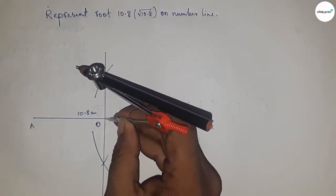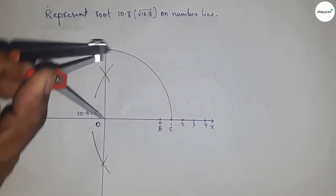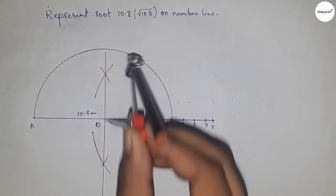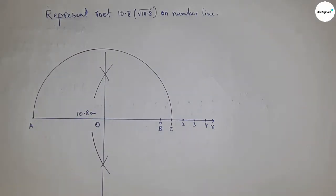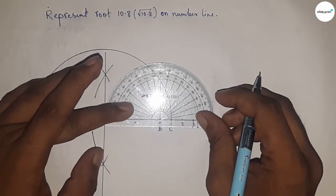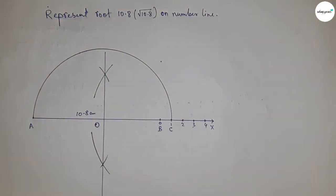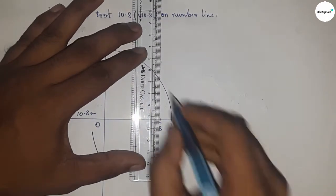Now taking the length OA and OC to draw a semicircle through the point A and C, so drawing semicircle. Next, drawing a 90 degree angle on the point B by using protractor on the point B, so drawing 90 degree.